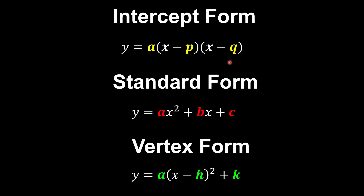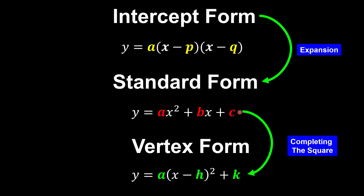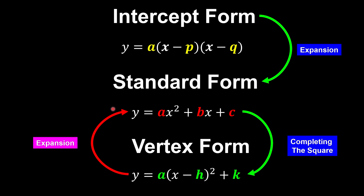Quadratic expansion can be expressed in a few forms. Intercept form is where p and q are the x-intercepts. When we expand these intercept forms, we go back to the standard form. If we do completing the square from standard form, we get the vertex form, where h and k tell us the minimum or maximum point. If we expand back from the vertex form, we get the standard form. And when we factorize the standard form, we get the intercept form.